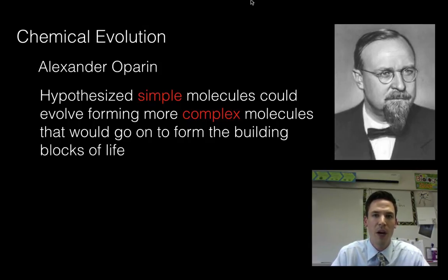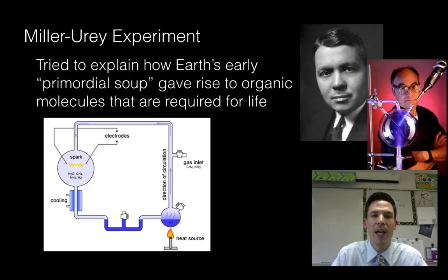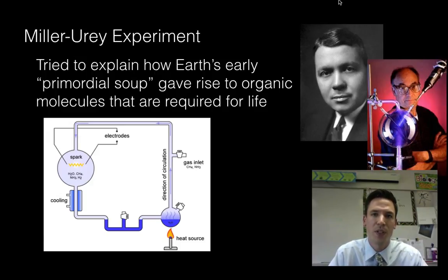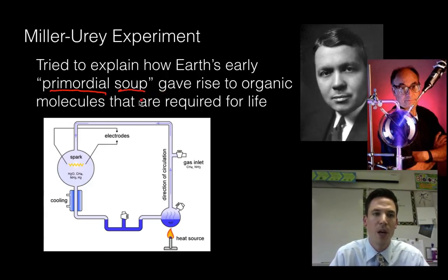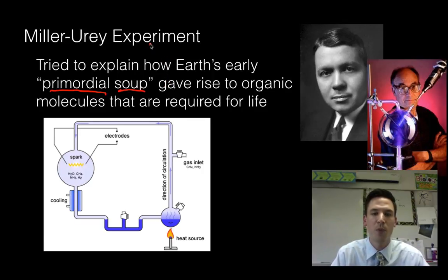With this hypothesis, we obviously want to test these things out. Alexander Oparin didn't do so much testing himself, but two people who did were Stanley Miller and Harold Urey. They took Oparin's idea of chemical evolution — that molecules can go from inorganic and simple to organic and complex — and tested it in the lab. They tried to explain how Earth's early primordial soup, a term Oparin coined, could give rise to the first molecules of life. The idea is that our oceans, before life existed, were just a soup of inorganic molecules stewing and brewing, not harboring life, and they wanted to show how we can go from this primordial soup to maybe the first molecules that gave rise to life.